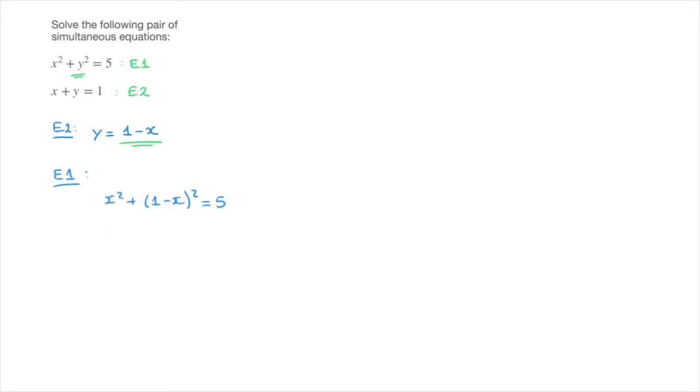I now open up the parentheses and simplify as much as possible, so that would be x squared plus 1 minus 2x plus x squared equals 5. Simplifying, that leads us to 2x squared minus 2x plus 1 equals 5.